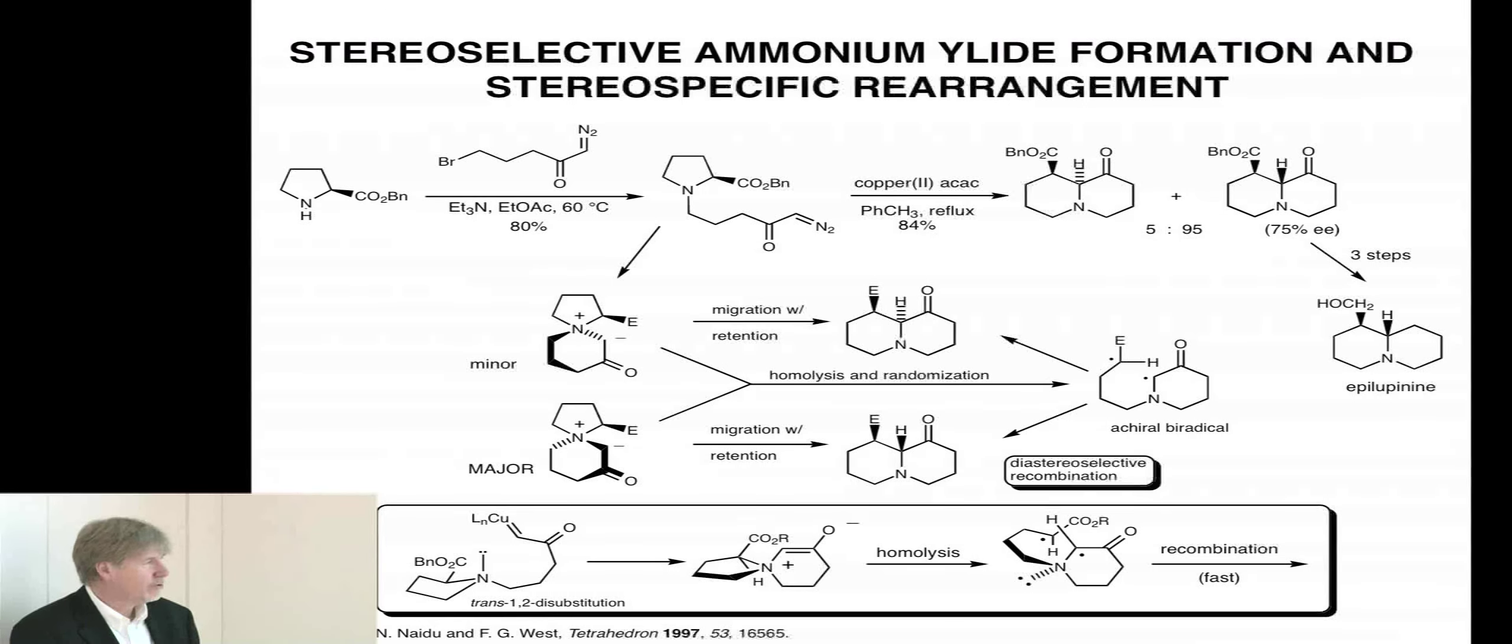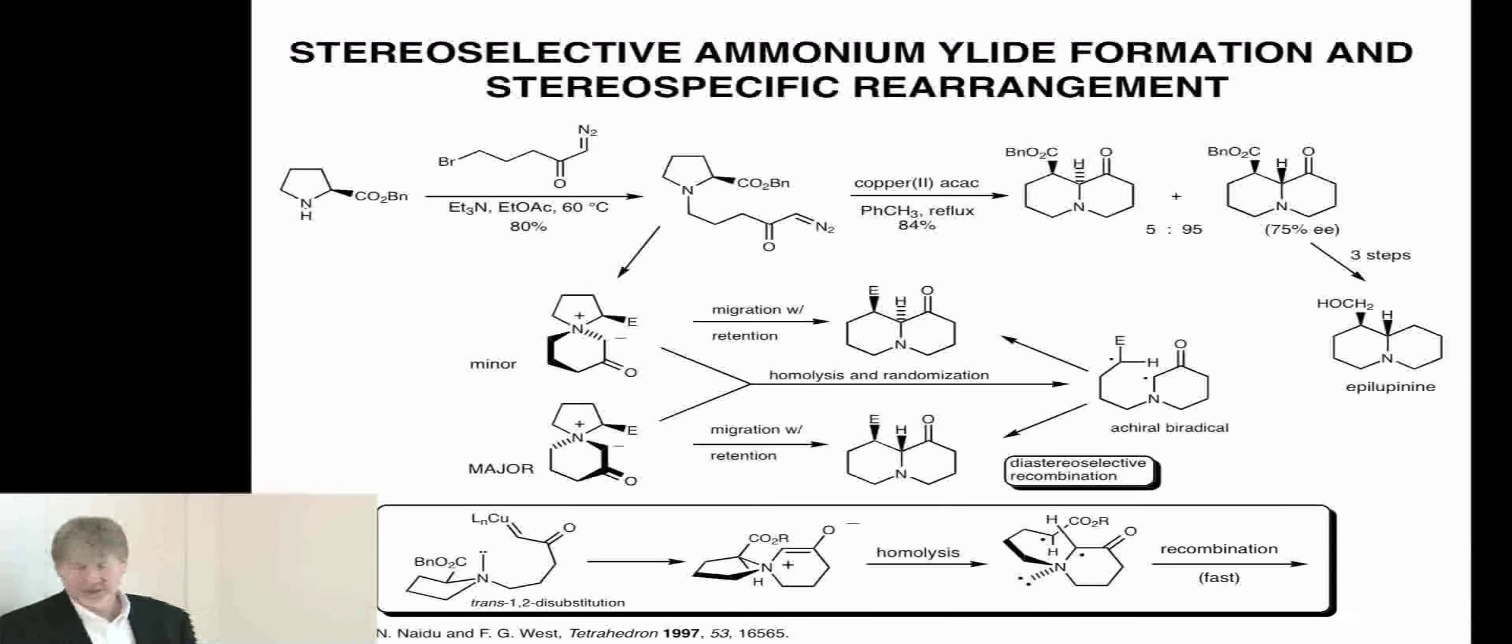Recombination is probably quite fast. A lot of it will go through migration with retention, but some will undergo bond rotation and eventually get to an achiral biradical that, when it recombines, should give racemic material. That's our explanation for that.